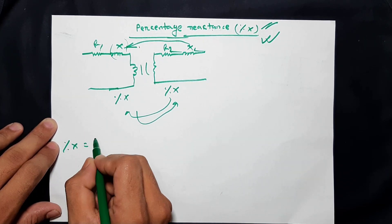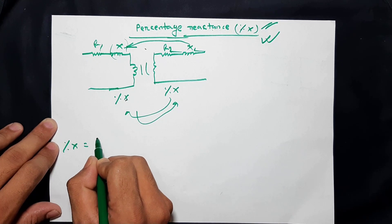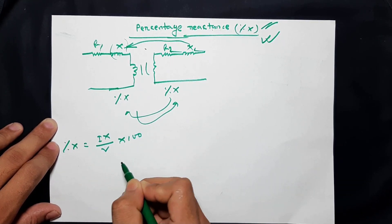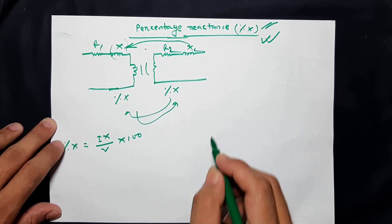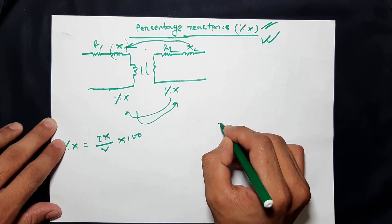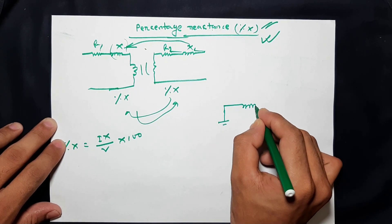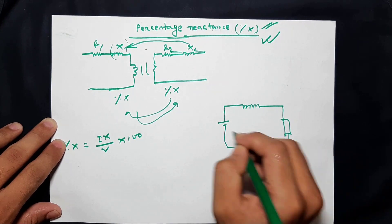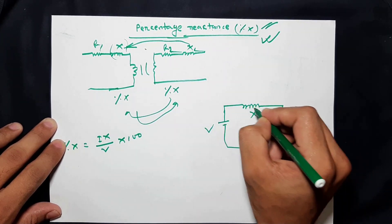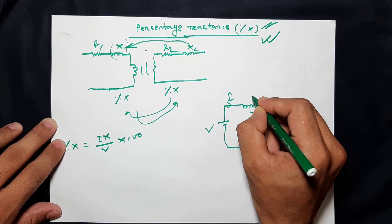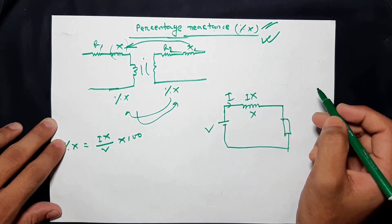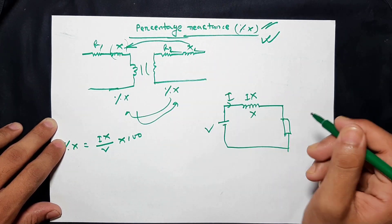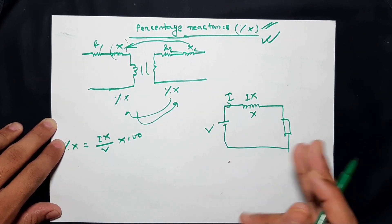We can see that percentage reactance X is equal to I·X divided by V, into 100. Suppose we have a voltage source, and this is the reactance. Suppose we have a load and a flow circuit. So this is the supply voltage V, we have a reactance X, and the current causes a voltage drop. The voltage drop across X is I·X.